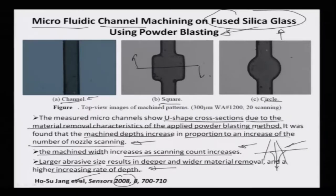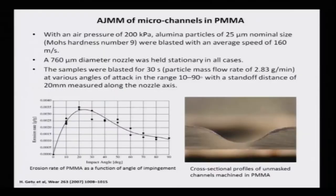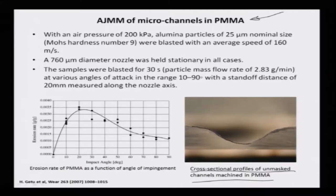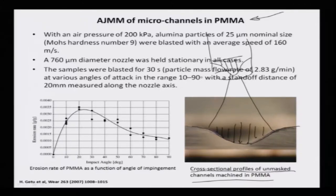Another very wonderful example of micro-machined patterns corresponds to about 20 scans on a surface with a beam diameter of about 300 micrometers. This is another very interesting example of micro machining done in polymethyl methacrylate PMMA. You can see the cross-sectional profile of an unmasked channel machined in PMMA — the profile created by powder blasting shows maximum removal rate in the center and minimum removal rate towards the sides, because the jet emanating from the nozzle has a parabolic velocity distribution.